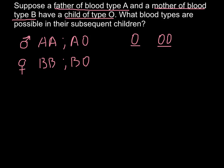And as you see here, if we cross genotype AA with BB, there is no way how this child would inherit two O alleles from such cross.